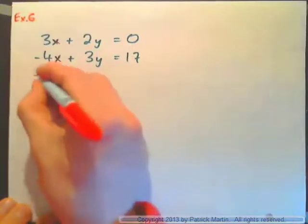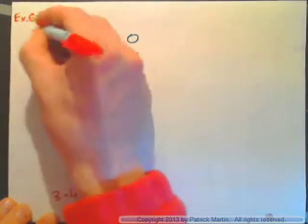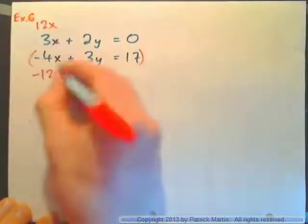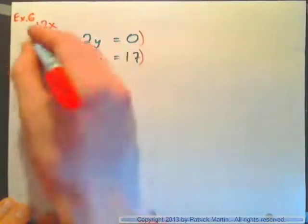Couldn't you turn this bottom one into negative 12x, and turn the top one into 12x? So what do you multiply this by to get this? What do you multiply this equation by to get that?